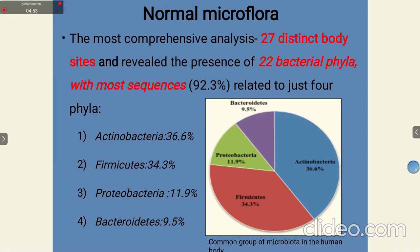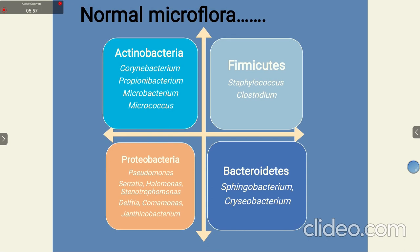The most comprehensive analysis of normal microflora identified 27 distinct body sites and revealed the presence of 22 bacterial phyla, with most sequences — 92.3% — related to just four phyla. These four phyla are: Actinobacteria (36.6%), Firmicutes (34.3%), Proteobacteria (11.9%), and Bacteroidetes (9.5%), comprising 92.3% of bacteria on our body.